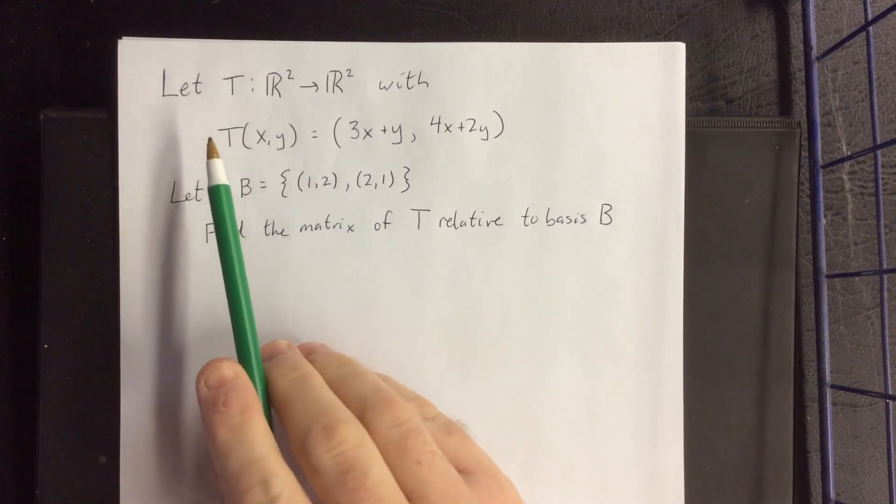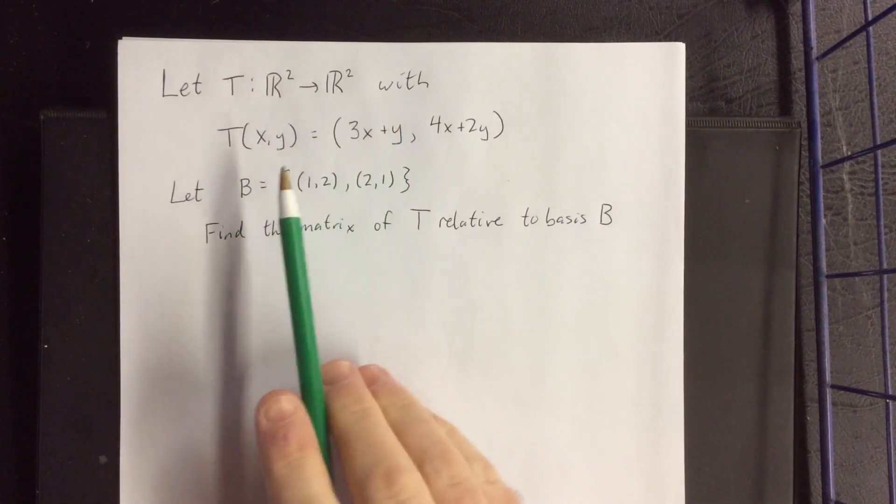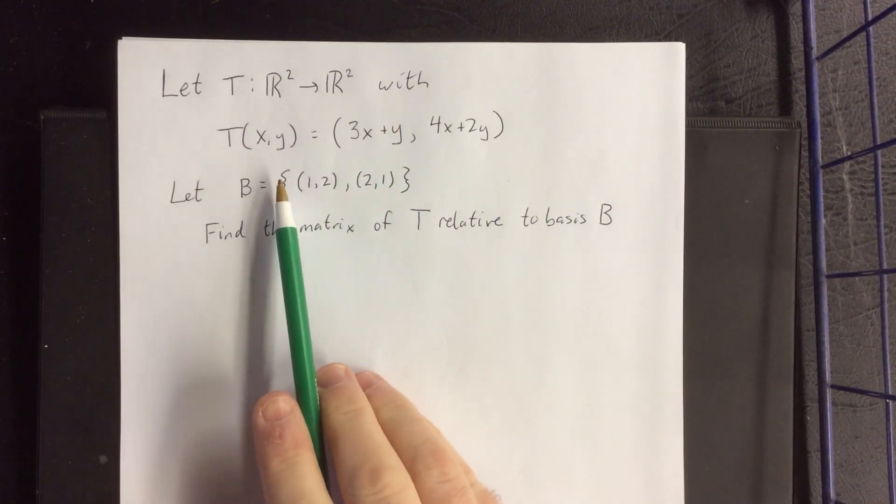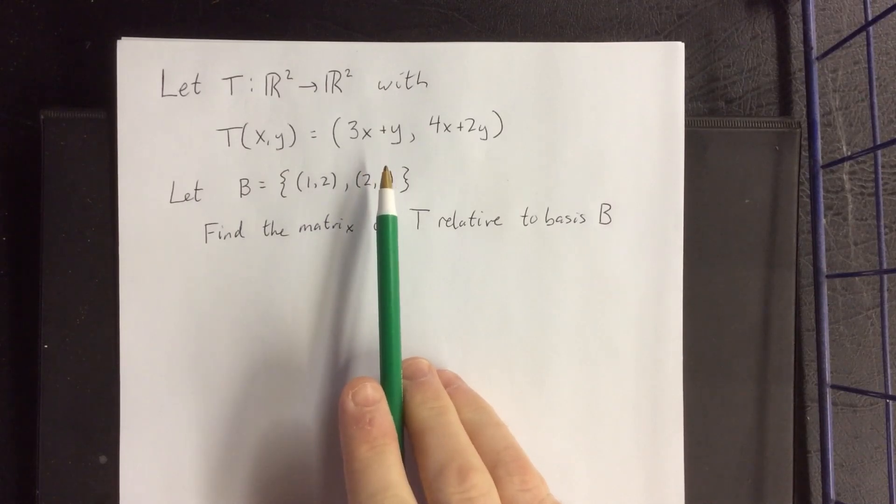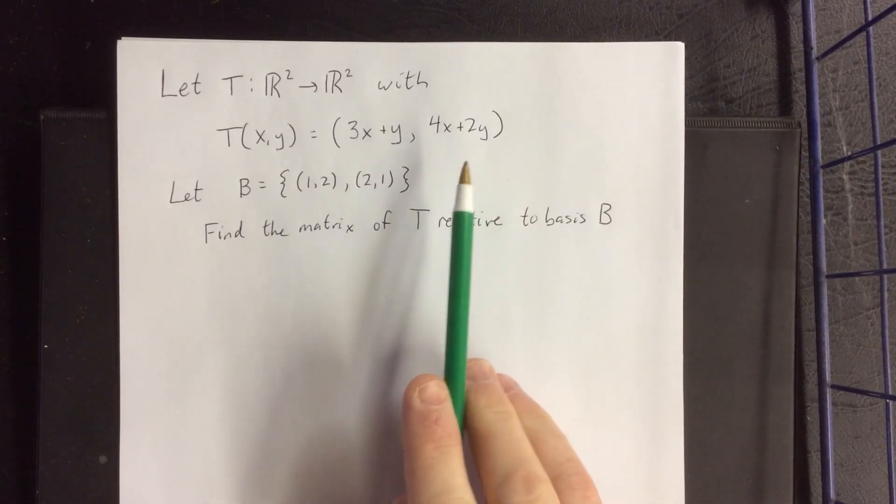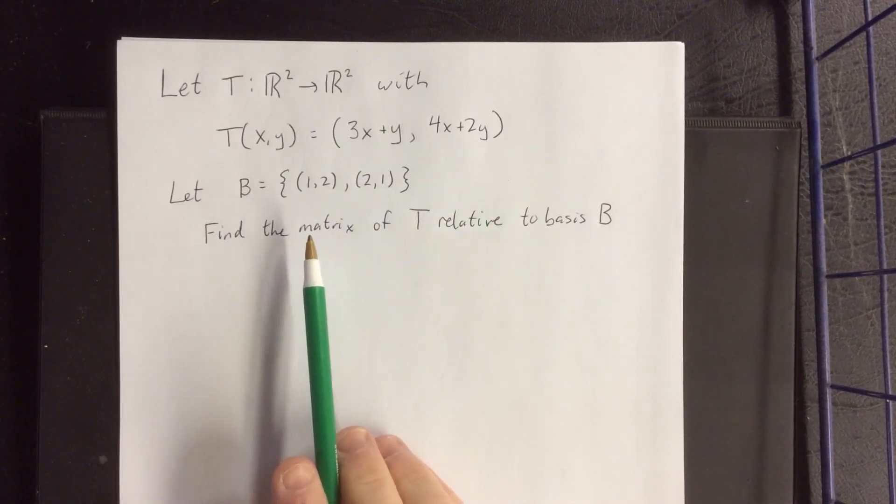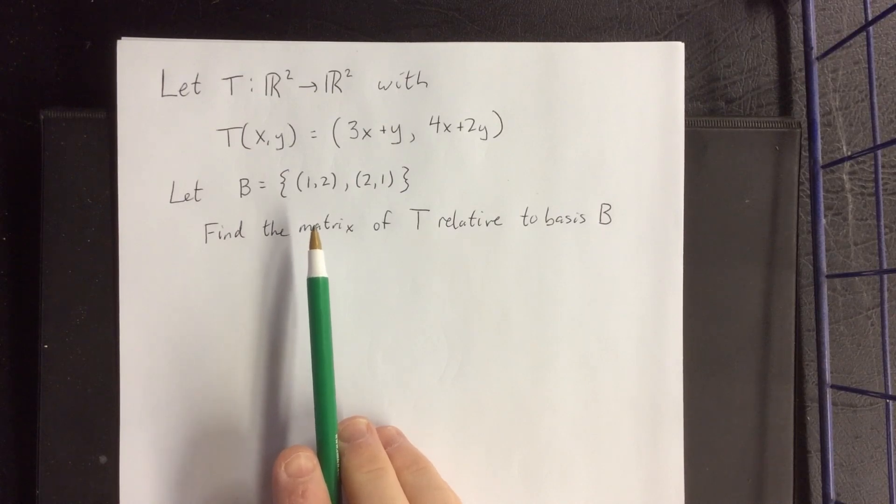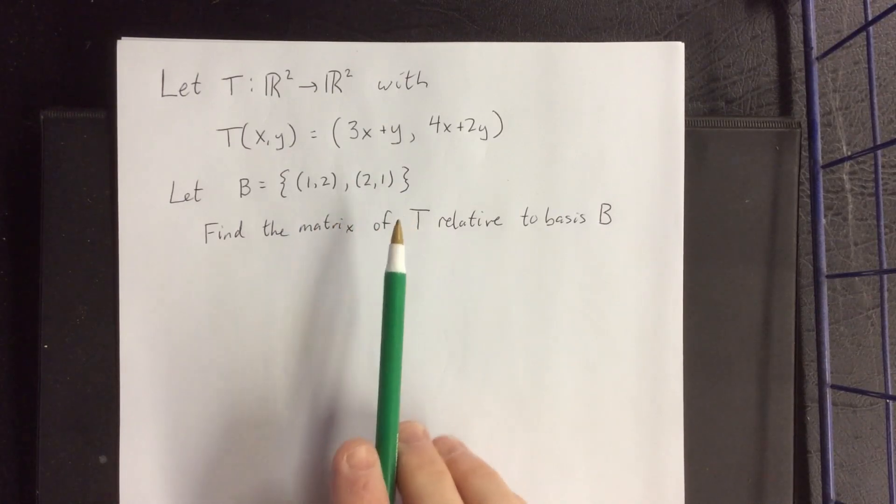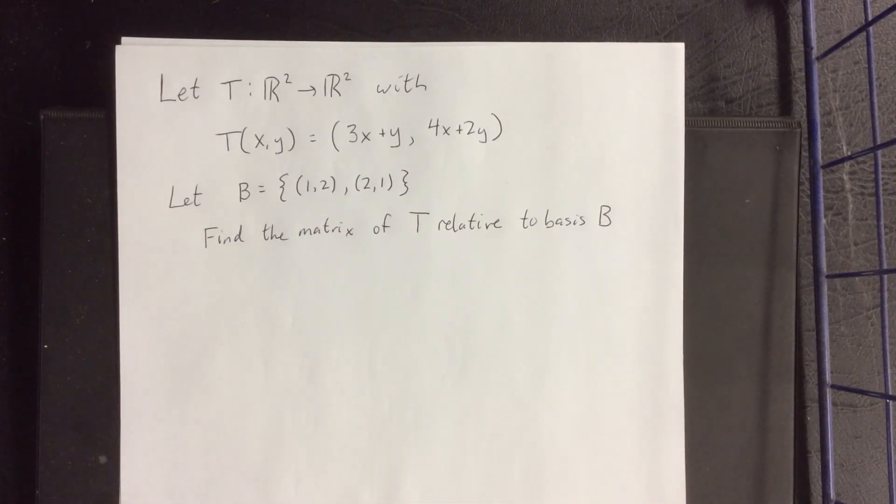So we're going to define a transformation that takes us from R² into R² with the image of the vector (x,y) being (3x+y, 4x+2y). We're also going to define a non-standard basis. The non-standard basis of R² will be {(1,2), (2,1)}. What we're going to do is find the matrix of T relative to the basis B.